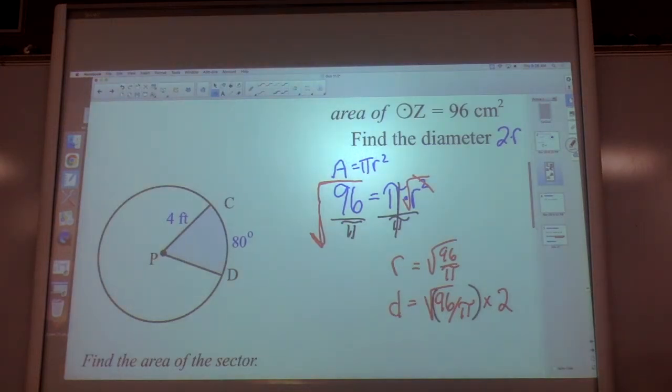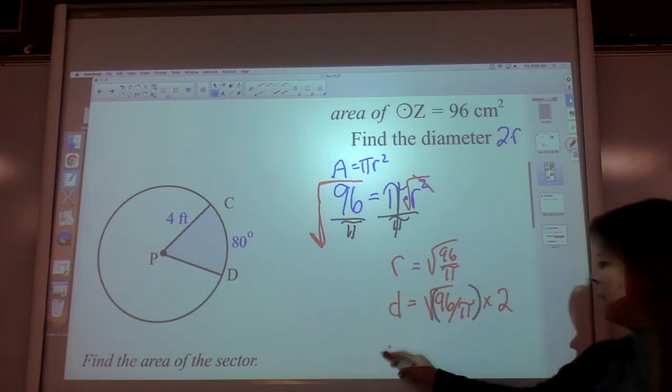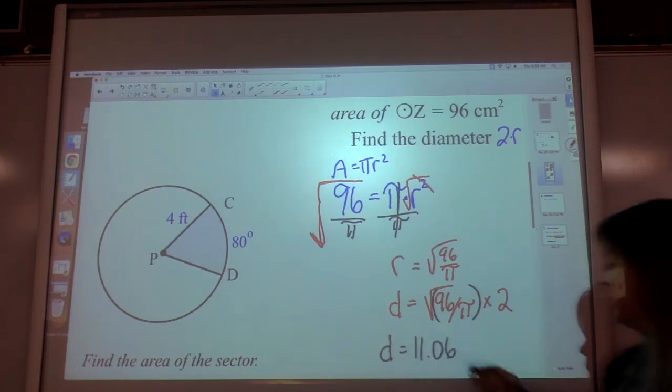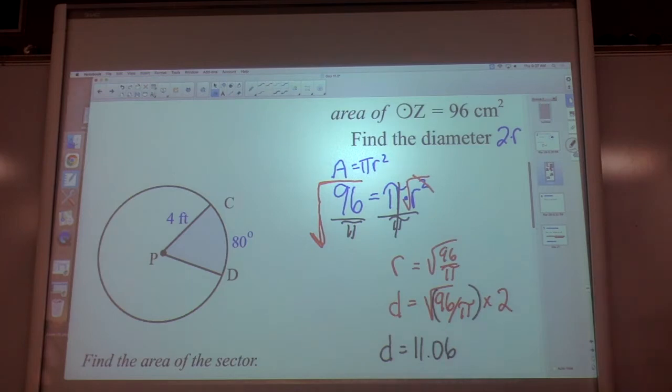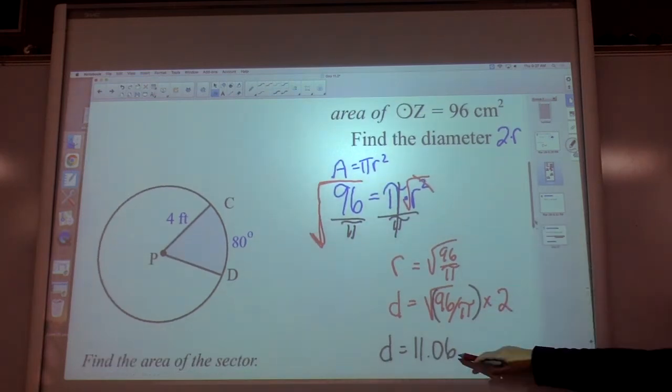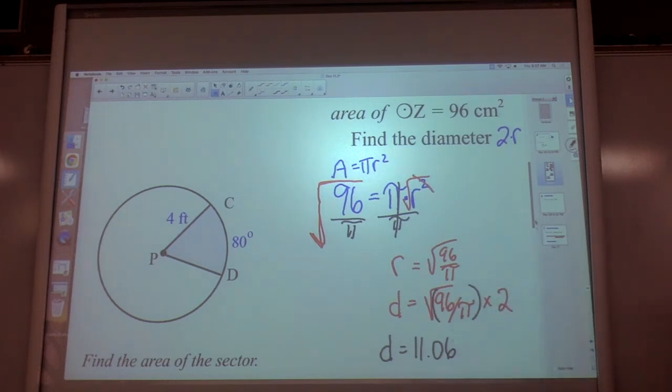The square root of 96 divided by π, and then you need to double it. Your diameter is 11.06. You could always check it by cutting that in half and typing in πr² to see if you get 96.